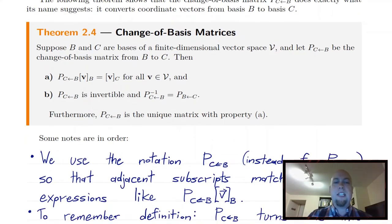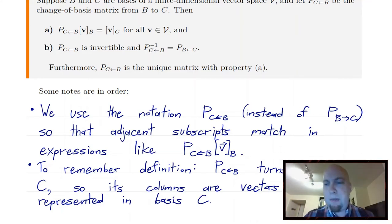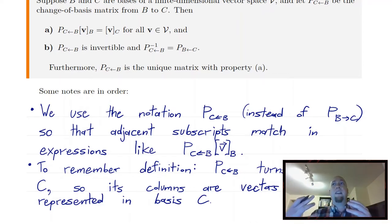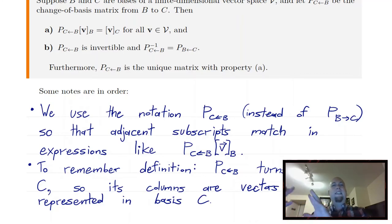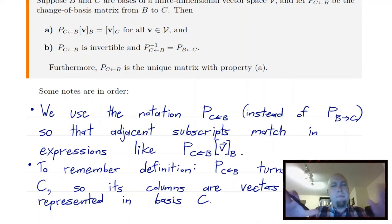Before we prove the theorem, a couple of quick notes about the notation. We're using P with a backward arrow from C to B — it looks really weird at first. The reason we use the backward arrow rather than a forward arrow is so that adjacent subscripts match in the theorem. Reading from right to left, just as function notation and matrix multiplication work right to left: the coordinate vector with subscript B goes into the matrix with B on the right, and you're left with something in basis C on the left-hand side. So things match up, and that's why we like that notation.